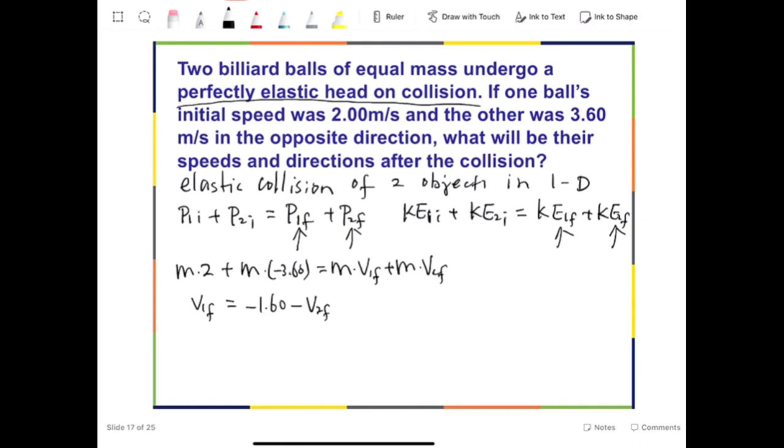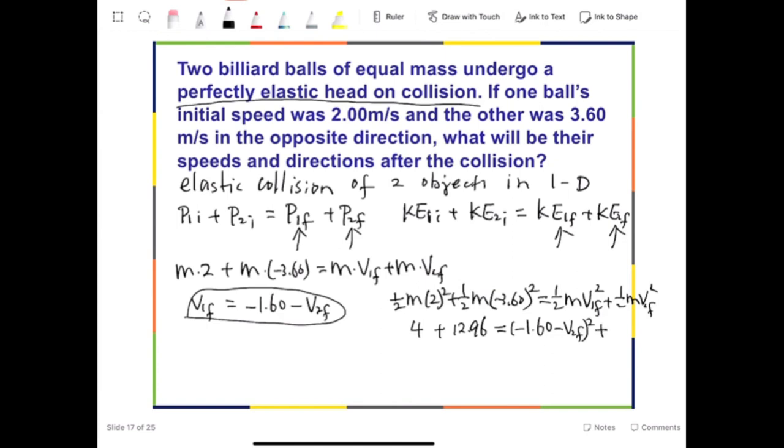Now, first, you can cancel M, because M is in every single term. So if you divide both sides by M, M is gone. So even mass is not given, but it doesn't matter. And then we can write the second equation, which is going to be 1.5M times 2 squared plus 1.5M times negative 3.60 squared equals 1.5Mv₁f squared plus 1.5Mv₂f squared. Now again, we can cancel 1.5M in this equation. So that becomes 4 plus 12.96 equals v₁f squared. Now, v₁f is equal to this, so we can replace that, negative 1.60 minus v₂f squared plus v₂f squared.